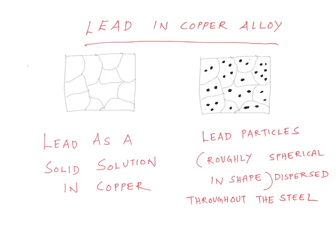Now in the thought experiment we are increasing the amount of lead. This will exceed the solubility limit of lead in copper. We will result in a microstructure which consists of two phases.